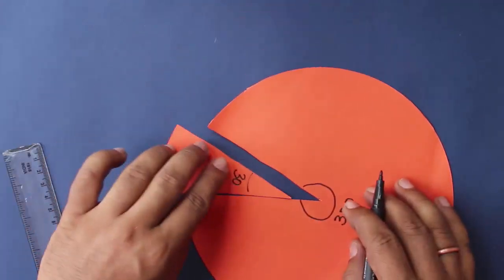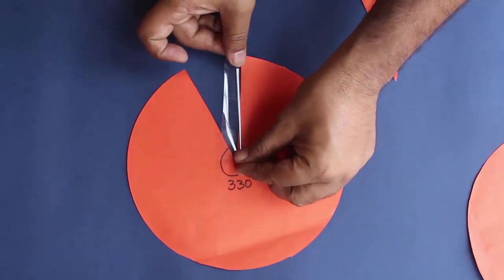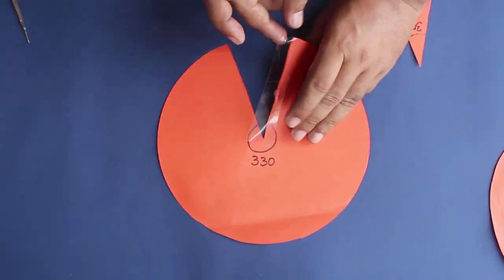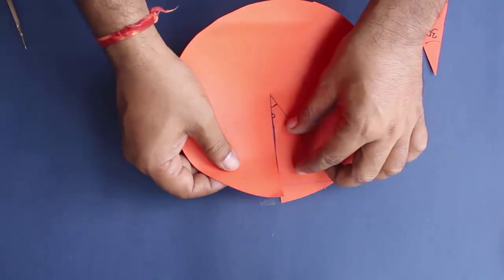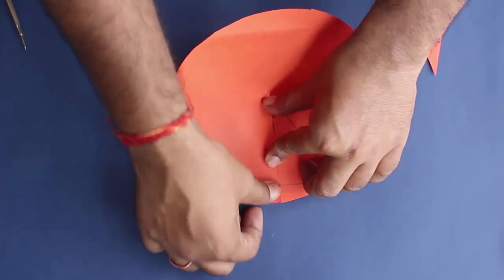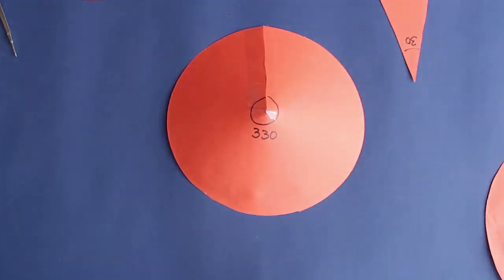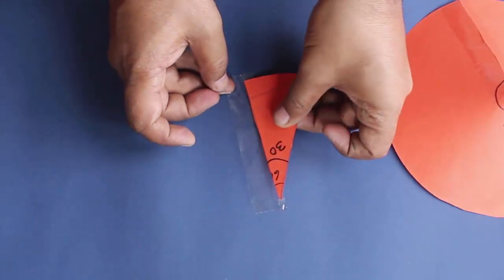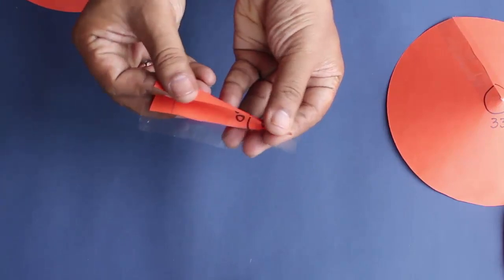We will put a tape on the side of this sector and join the other two sides. Now notice by doing this, the circle gets a height and a two dimensional circle gets converted to a cone. They are all made from a circle of the same size. You can see the slant height of both these cones are the same.